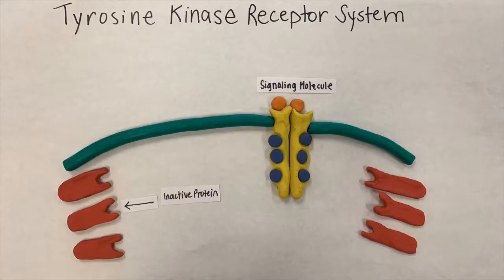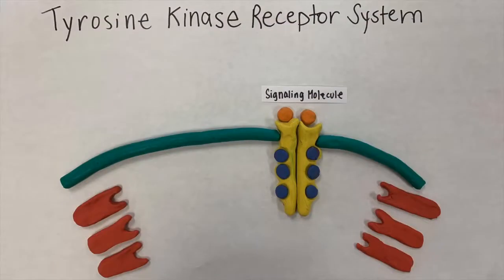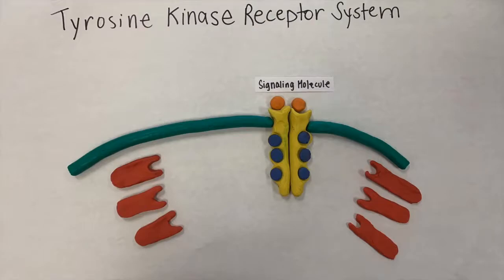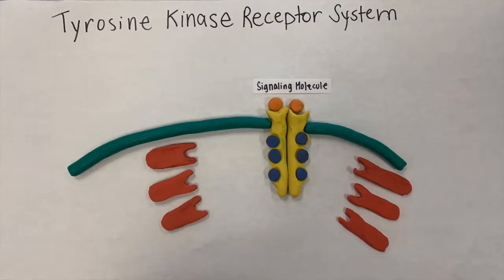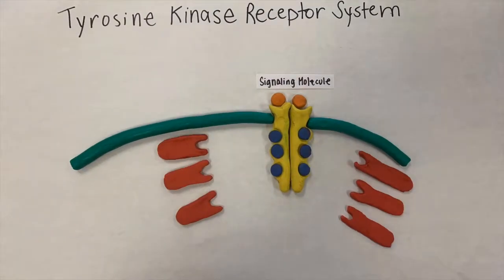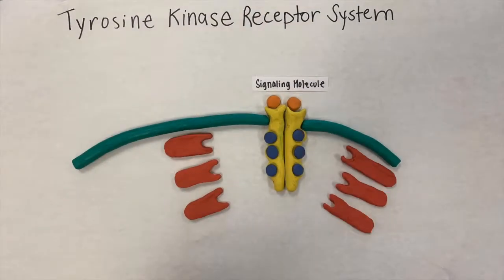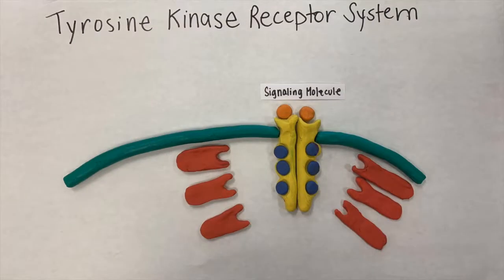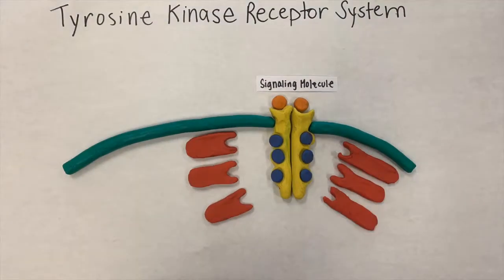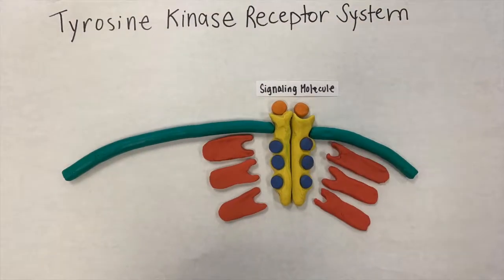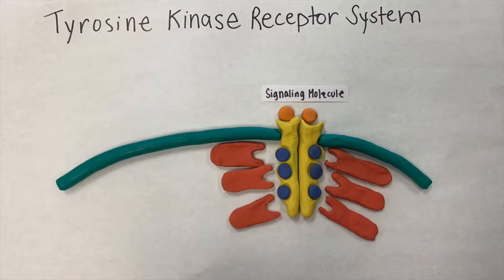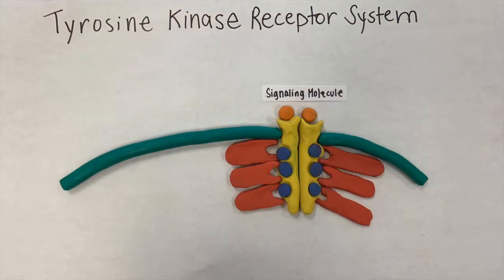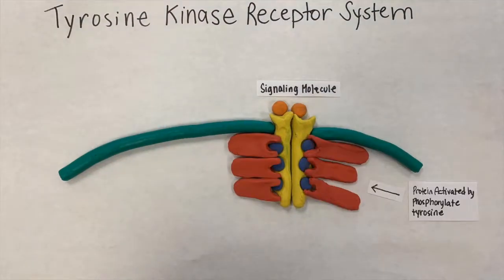After this, six different proteins are activated by the kinase, which then triggers its transduction pathway. This can lead to a wide variety of cellular responses.